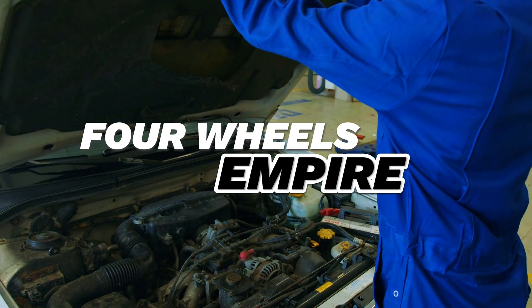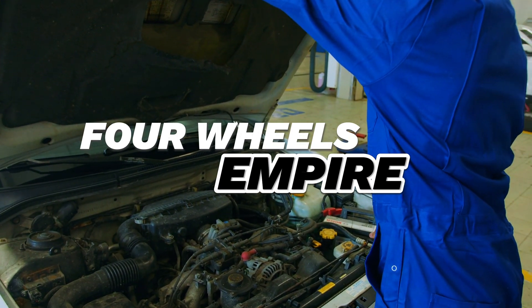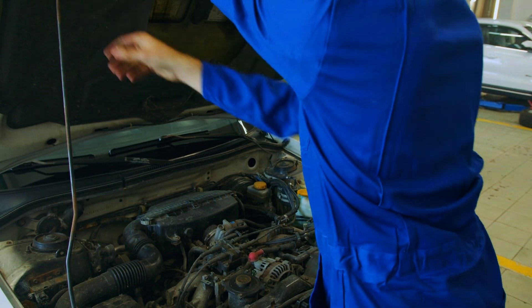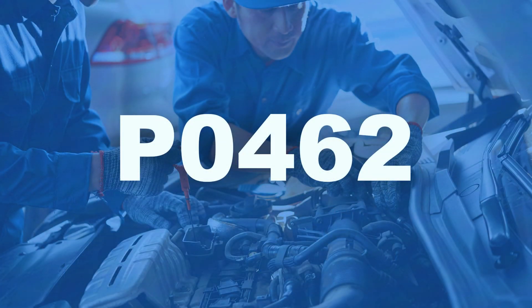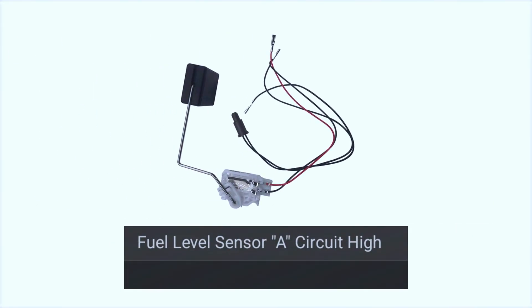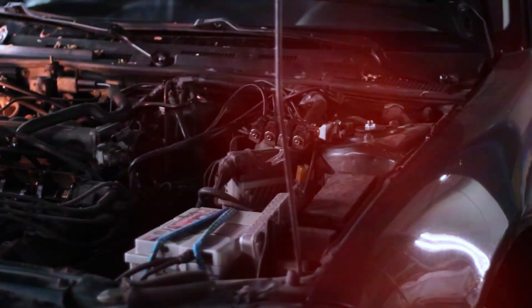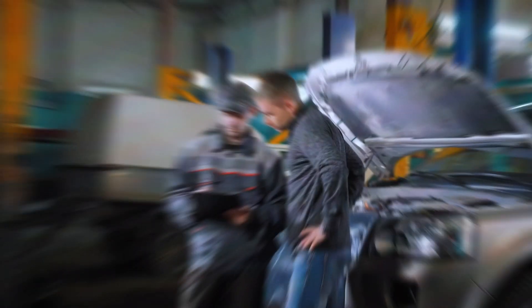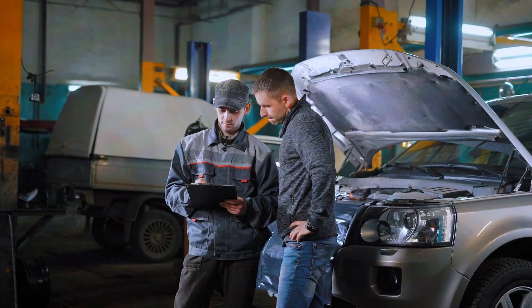Hey everyone! Welcome back to the channel. Today we're diving into a common OBD2 trouble code, the P0462. This code is about a problem with your fuel level sensor circuit, specifically showing low input. This code can lead to issues with reading your fuel gauge correctly, which can be pretty inconvenient and misleading. But no worries, I'll walk you through step by step on diagnosing and fixing it.